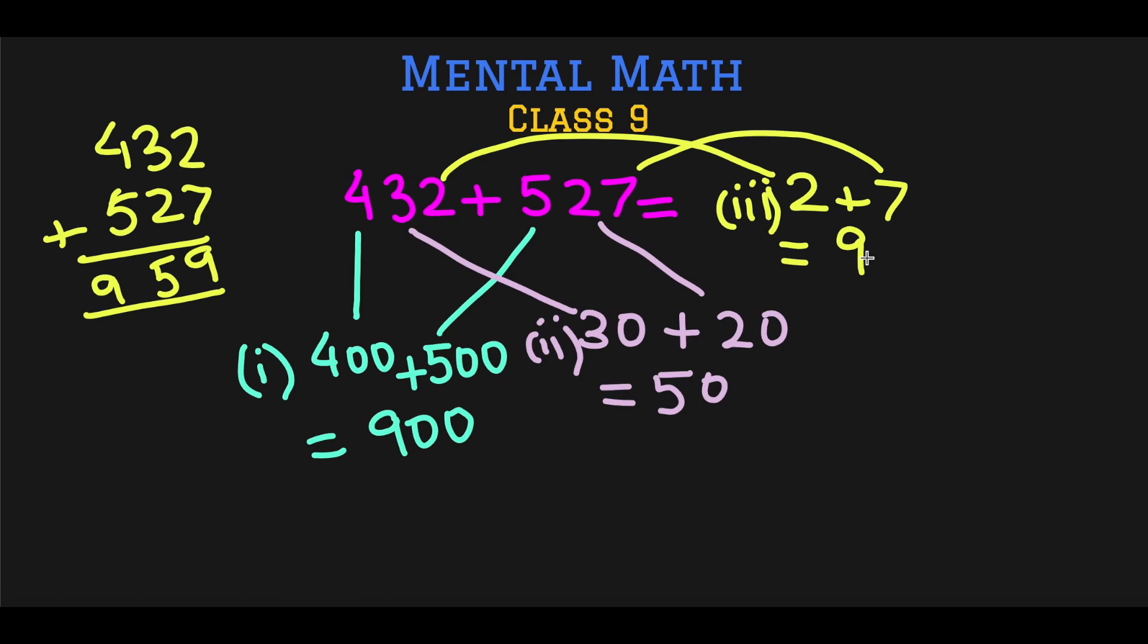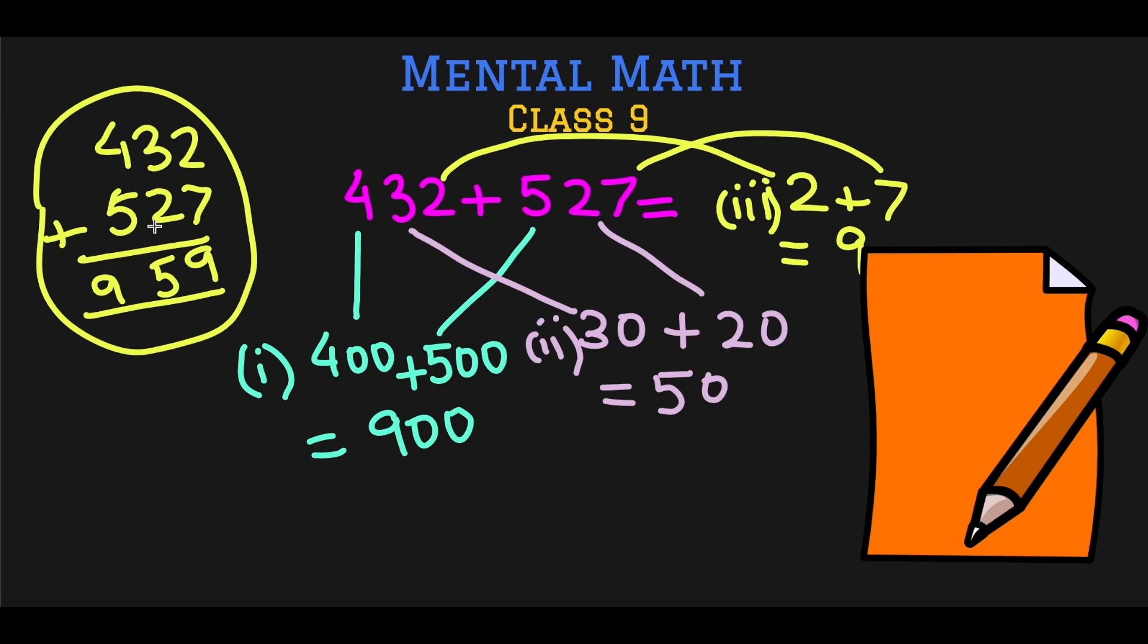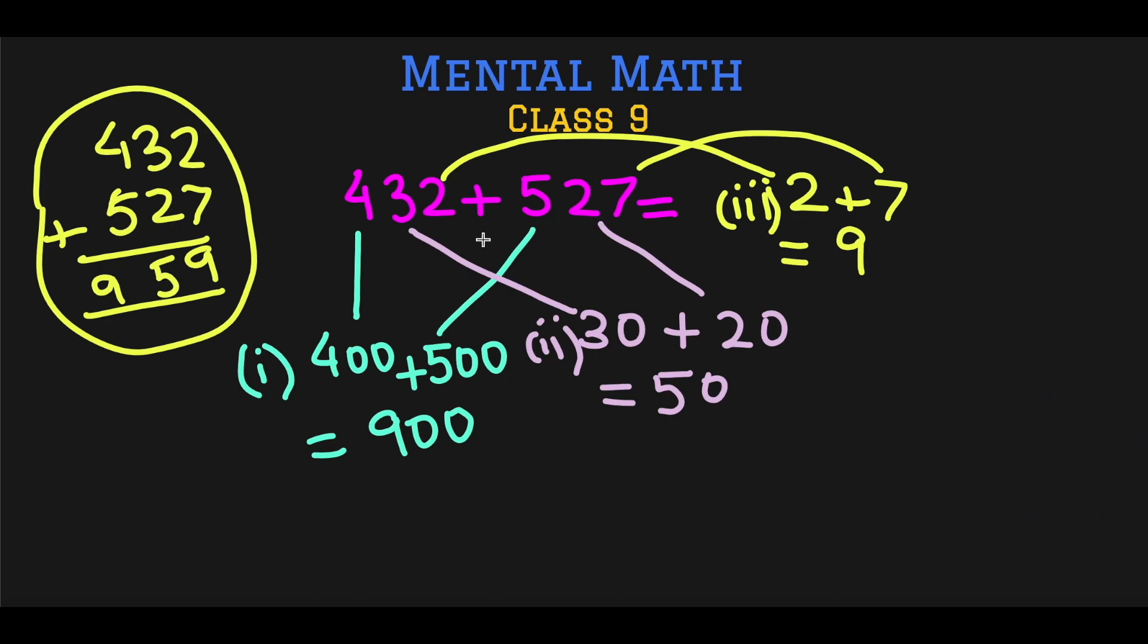The same answer as the answer that we got from the traditional method. This might seem longer because I'm actually writing it down, but imagine doing it in your brain—it will be faster than this method. For this method you need a paper and you need to put the question in this format to answer it, but for doing in your brain and using this method, you don't need to set up the question. You just need to look at the hundreds, tens, and ones and add them separately. So let's look at another question. So we have a question: 531 plus 246. Now part one, add the hundreds: 500 plus 200 is equal to 700.